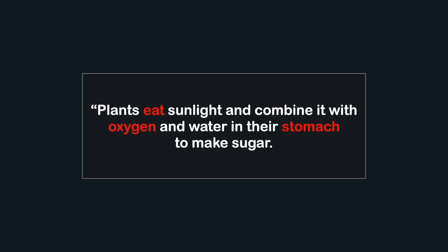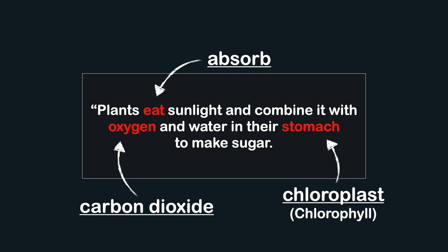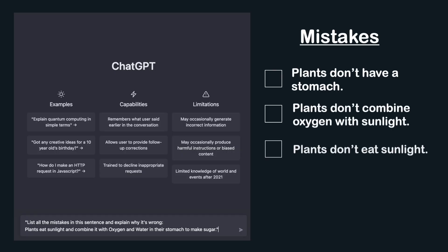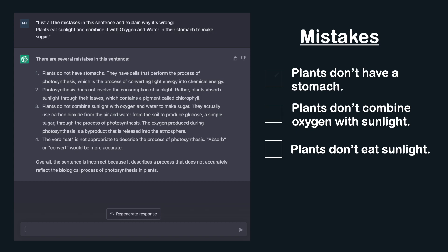ChatGPT is really effective at finding mistakes. Just explain something to it and ask if it's correct. I created a text with three mistakes: 'Plants eat sunlight and combine it with oxygen and water in their stomach to make sugar.' First, plants don't eat sunlight but absorb it. Second, they use carbon dioxide, not oxygen. Third, the process happens in the chloroplast, not the stomach. ChatGPT caught all three — fantastic.